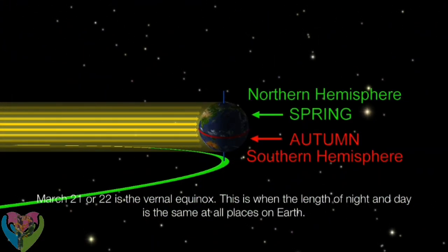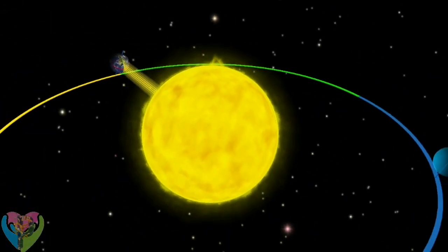March 21st or 22nd is the vernal equinox. This is when the length of night and day is the same at all places on the Earth.